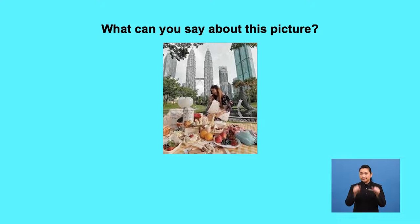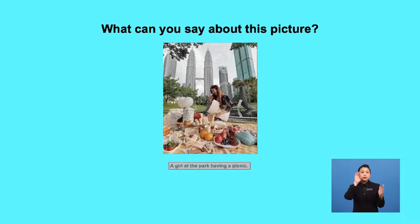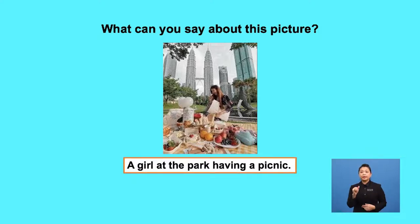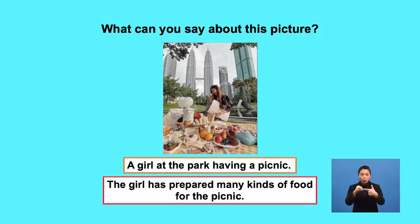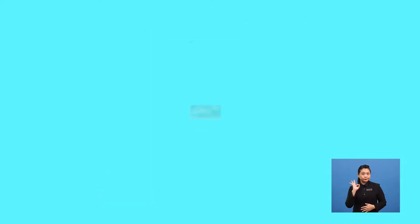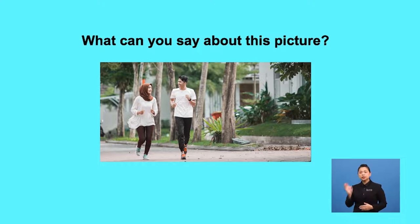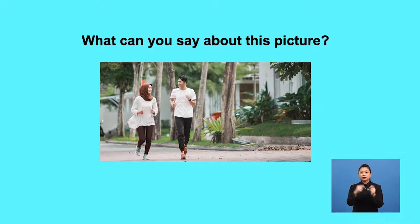Let's try another one. Look at it carefully. What can you say about this picture? Here are some possible answers: 'The picture shows a girl at the park having a picnic.' Or: 'The girl has prepared many kinds of food for the picnic.' Now you try this yourself at home. Look at the whole picture carefully first and remember to begin with the general idea.